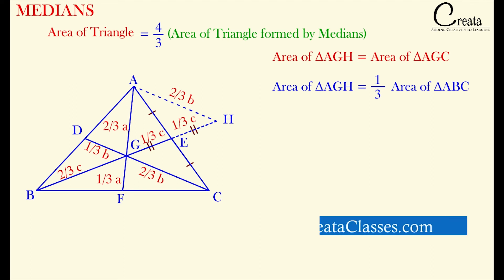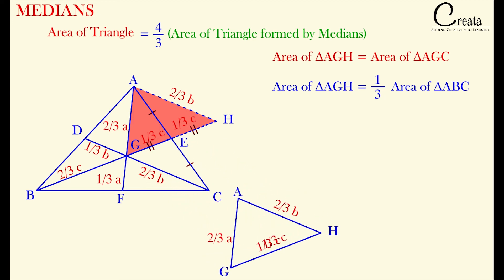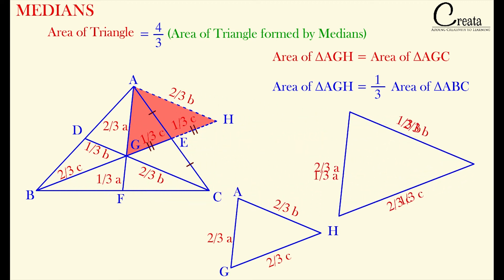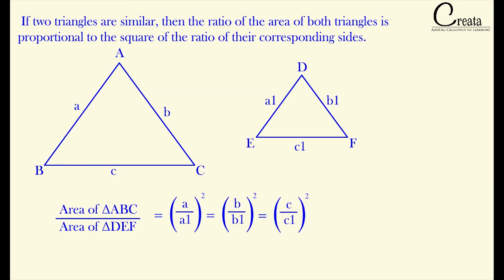Moving further, if we observe triangle AGH and take it out of the figure, are you able to observe that all the sides are 2 by 3 times the length of the medians? Let's compare this triangle with the triangle formed by the median. The triangle formed by the median has sides A, B and C, and triangle AGH has sides 2 by 3 A, 2 by 3 B and 2 by 3 C — that is the medians multiplied by 2 by 3. Both of these triangles are similar to each other since their ratios of corresponding sides are equal. We have done the theorem in similarity of triangles: if two triangles are similar, then the ratio of their areas is proportional to the square of the ratio of their corresponding sides.